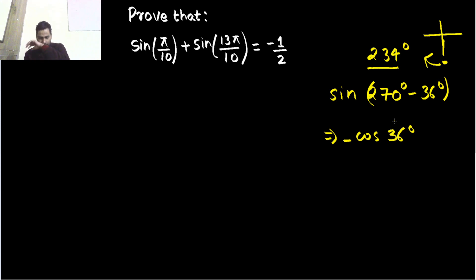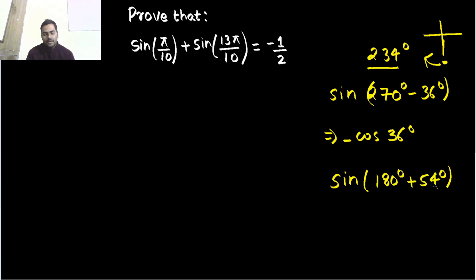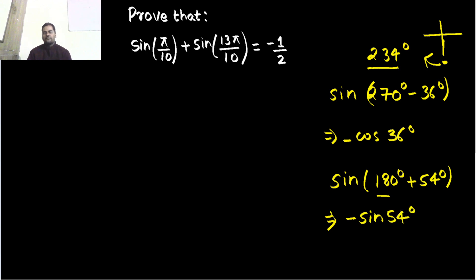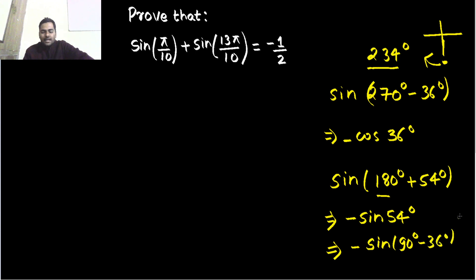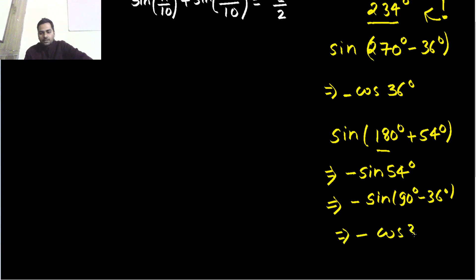Now if I had used sin(180° + 54°), that's again the third quadrant, so I would have to add a negative. But this time with 180, the name does not change — it remains sine — so I get minus sin(54°). With the help of the complementary angle, I write sin(54°) as sin(90° − 36°), which equals cos(36°). So again I get minus cos(36°) — the same result.